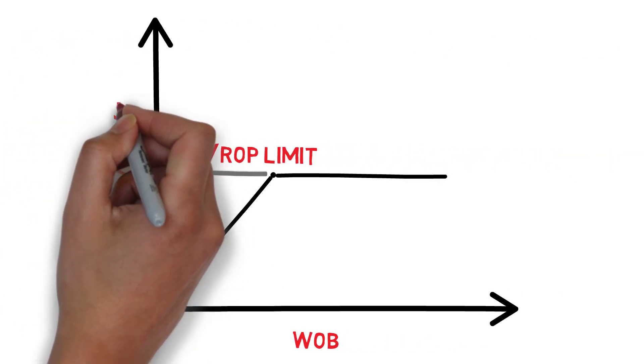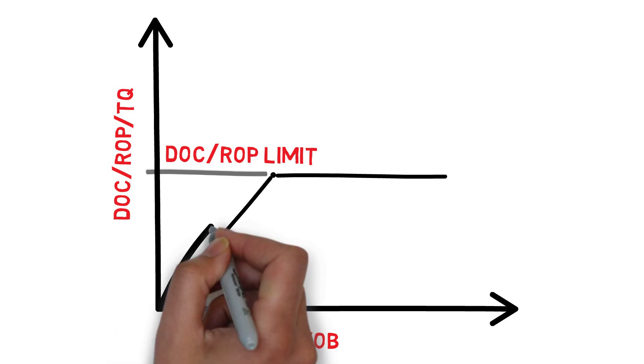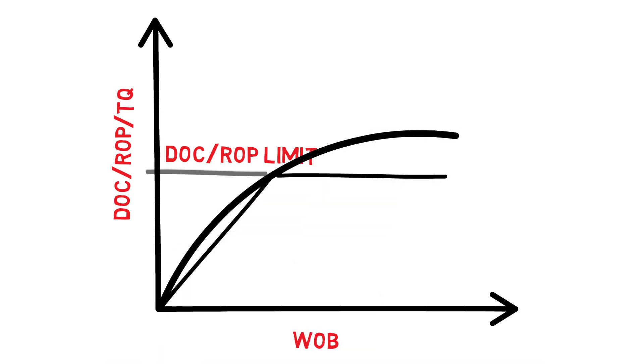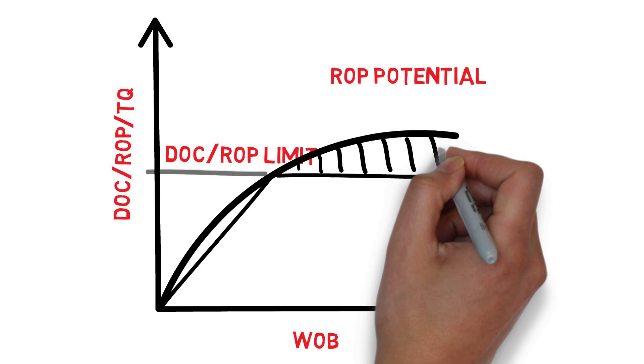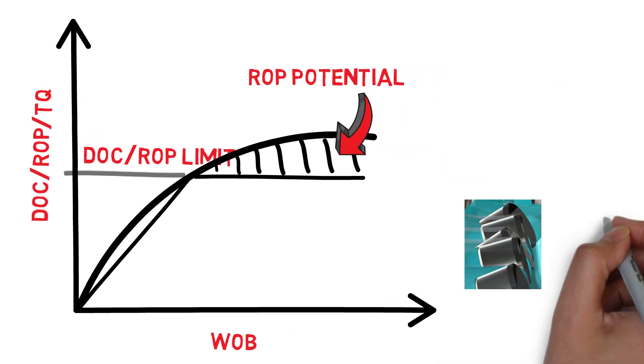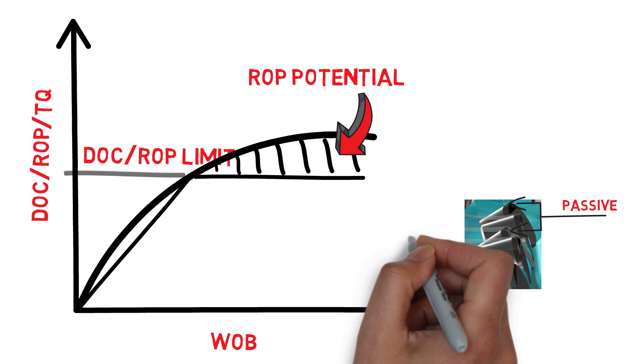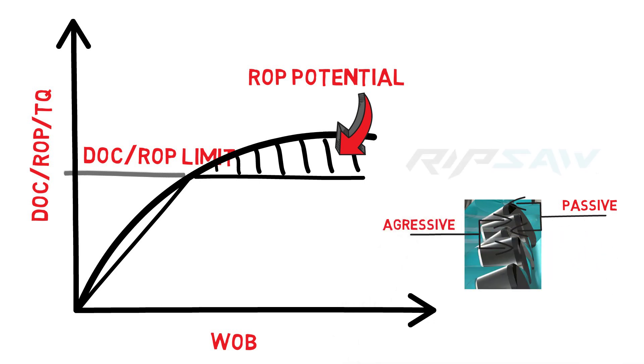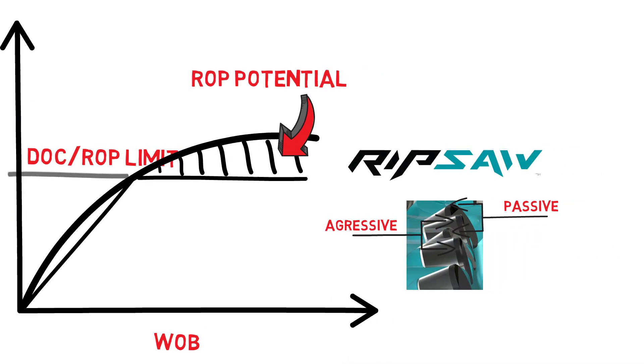A better solution is a bit where torque responses to change in rock hardness and depth of cut are manageable while still allowing full ROP potential. By using varied back rate patterns across the active cutting structure, Ulterra's Ripsaw technology achieves just that.